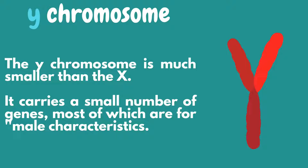The Y chromosome is much smaller than the X. It carries a small number of genes, most of which are for male characteristics. The Y chromosome contains a male-determining gene called the SRY gene, that causes testes to form in the embryo and results in the development of external and internal male genitalia.